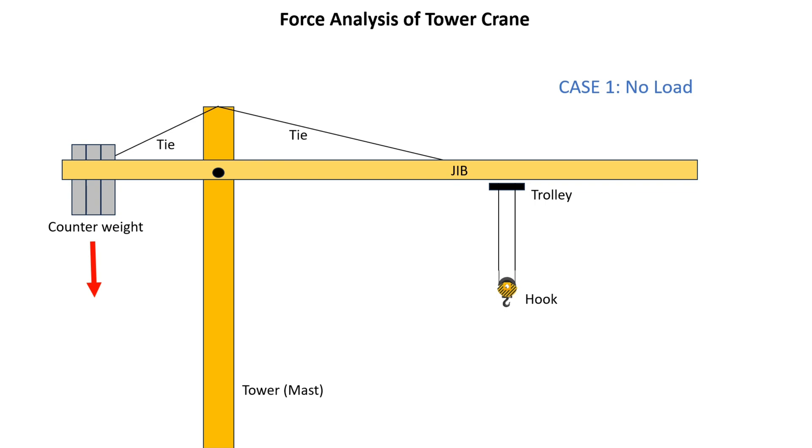There is only counterweight, and due to this counterweight, tension force is produced on the tie counter side. Ideally there is no tension on the trolley side, but in actuality there is tension on both sides due to the mass of elements and their elasticity. Due to this counterweight, an anti-clockwise bending moment is transferred to the tower.